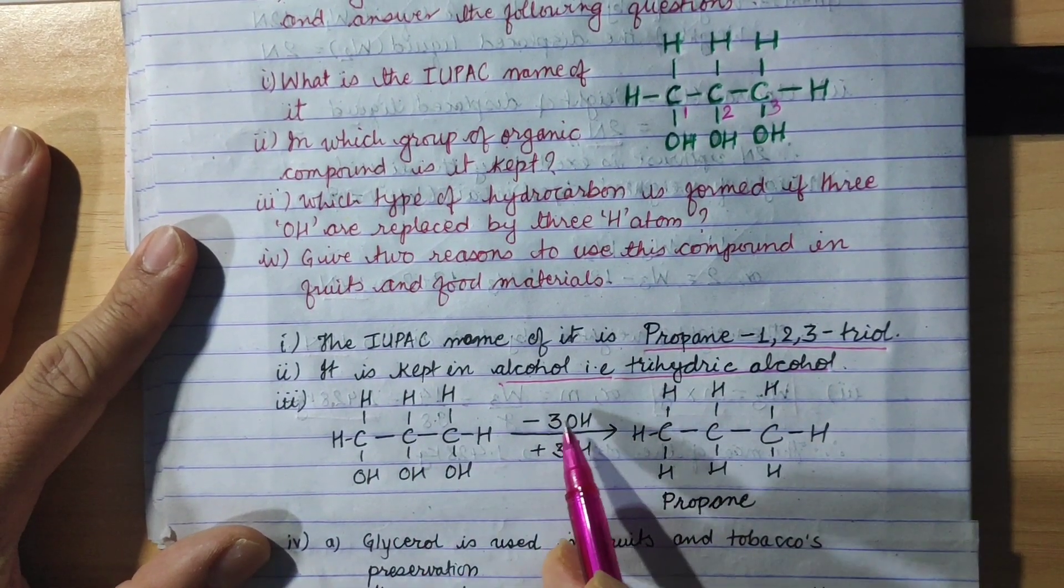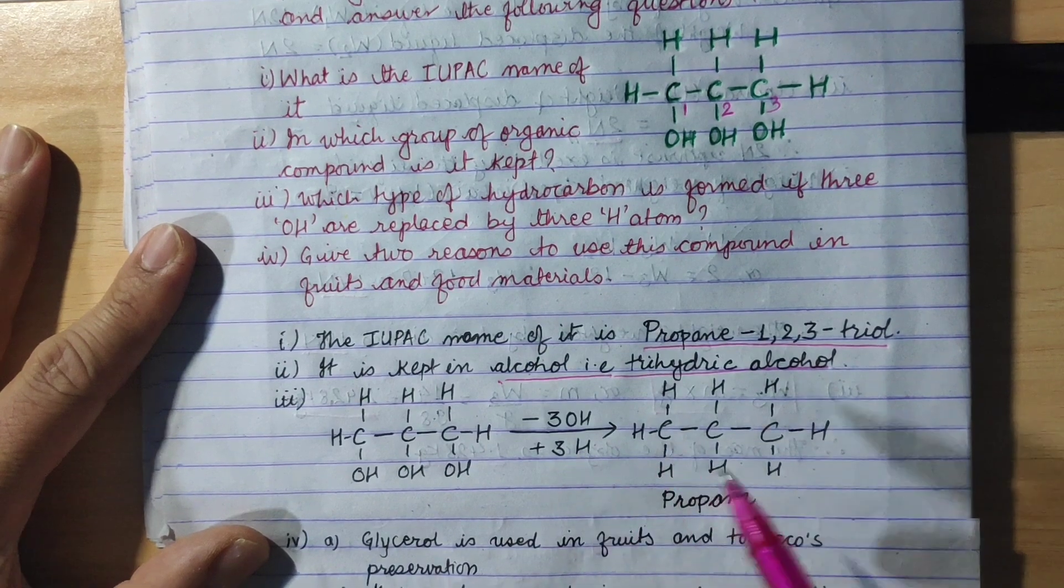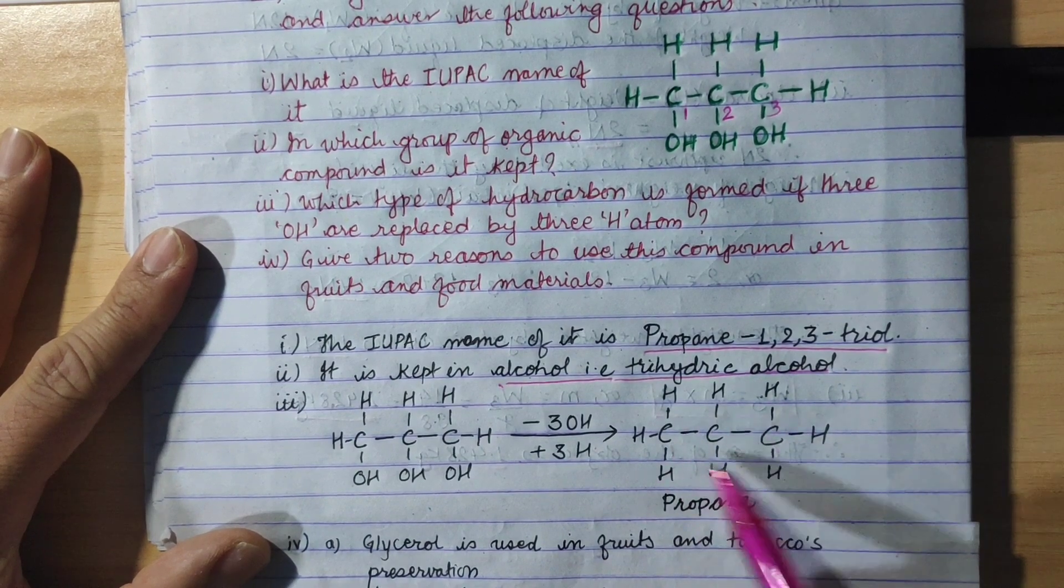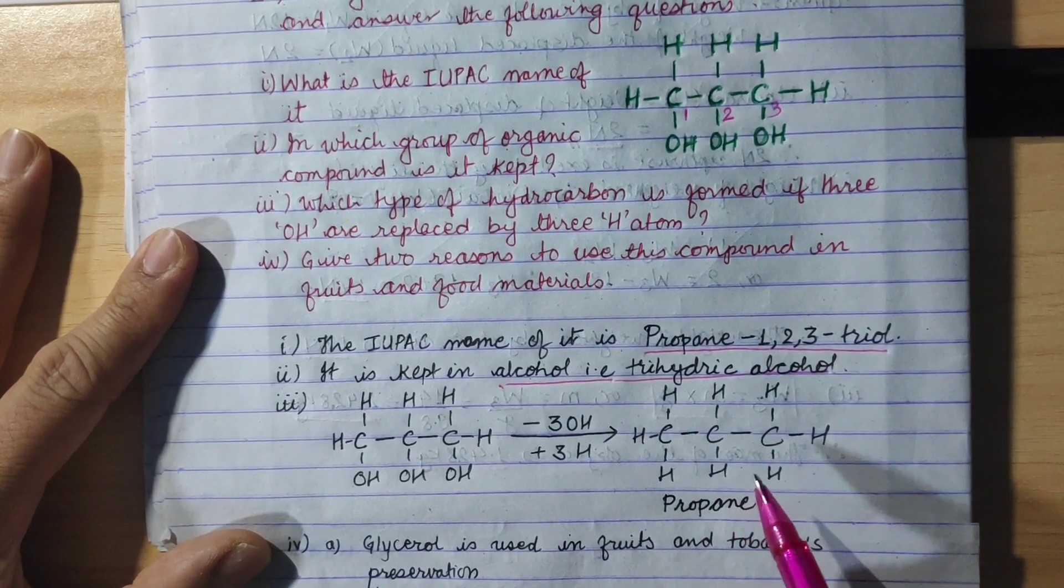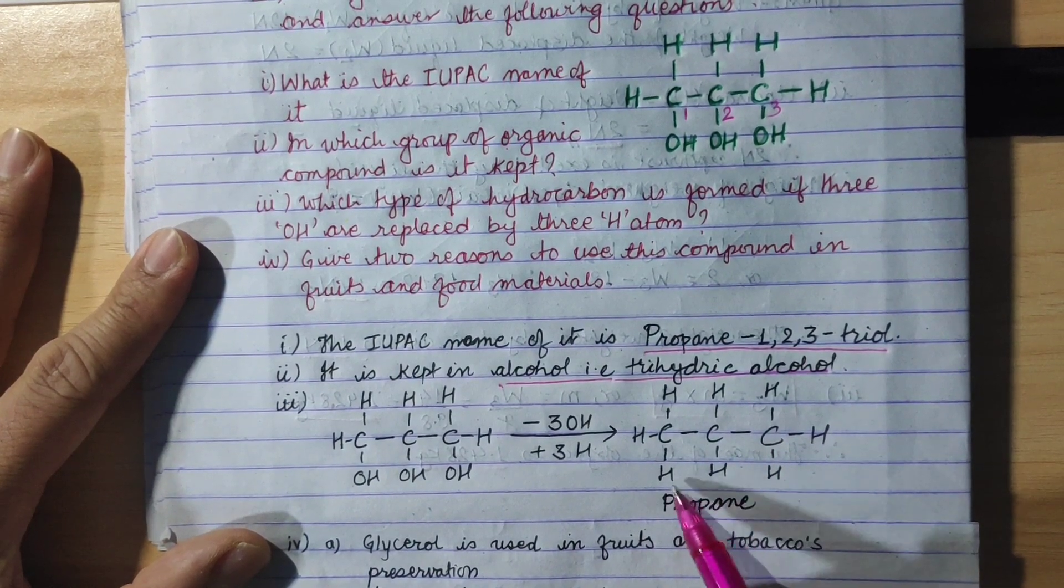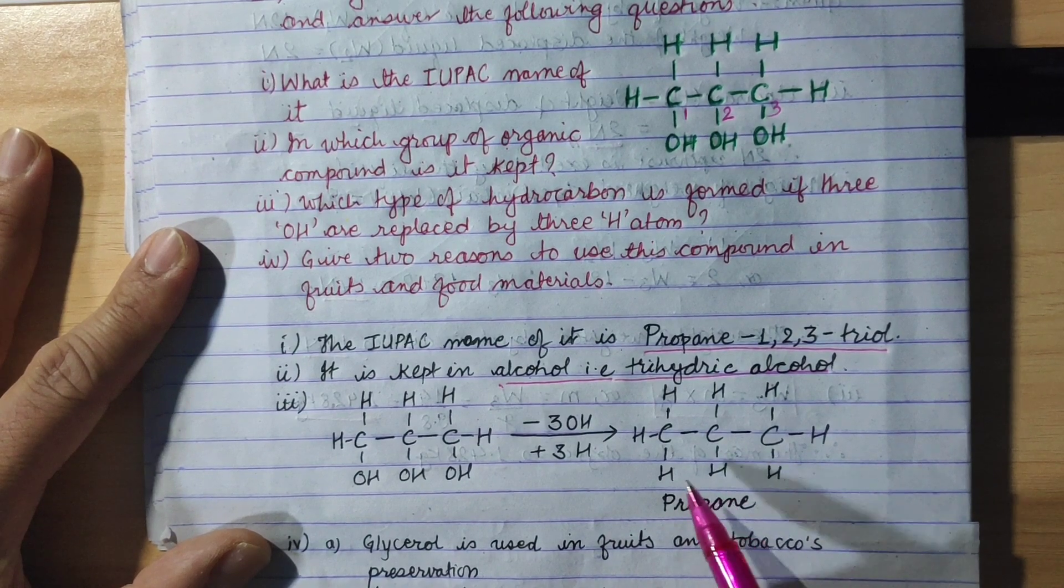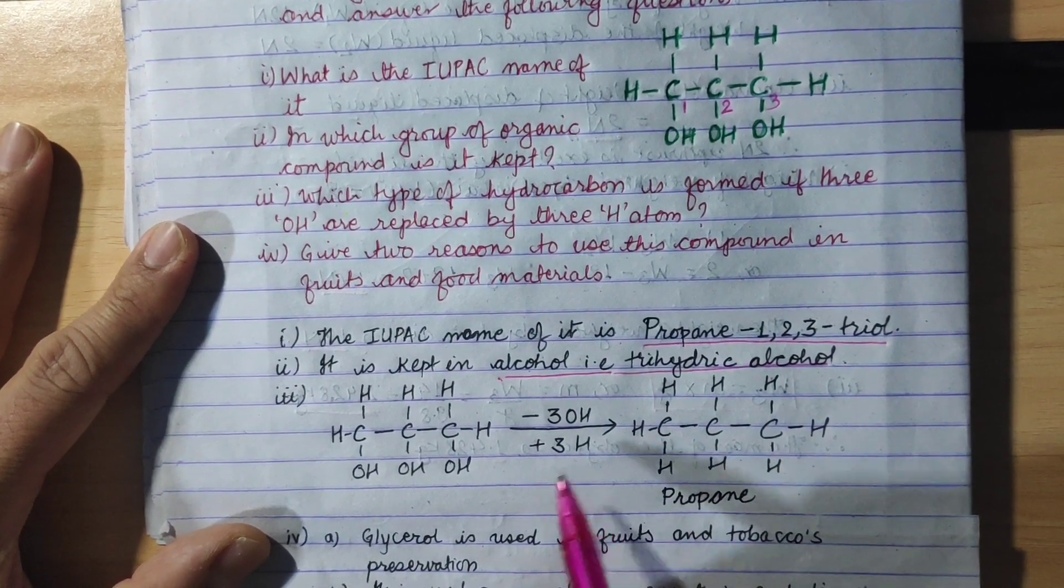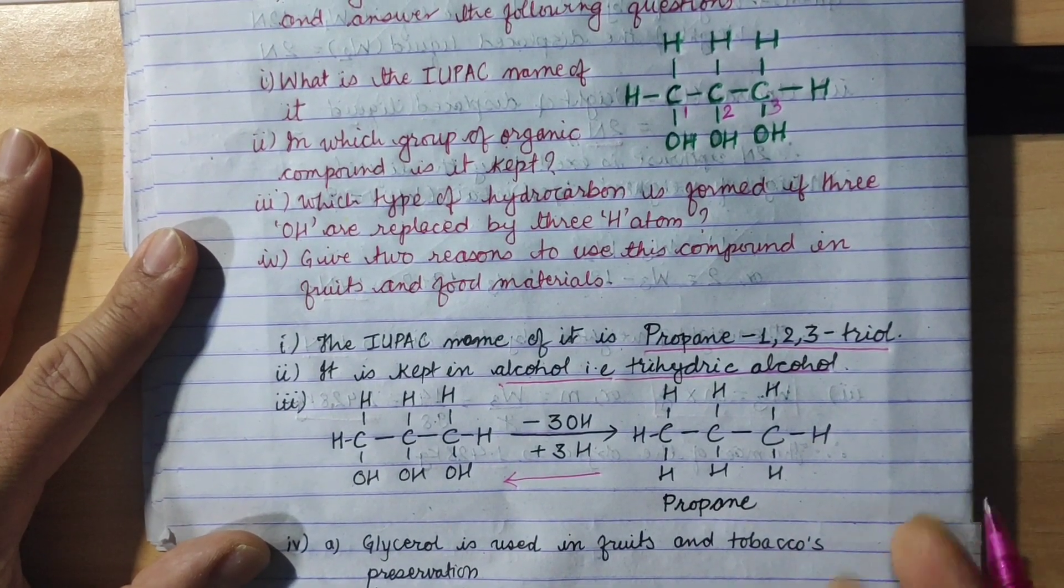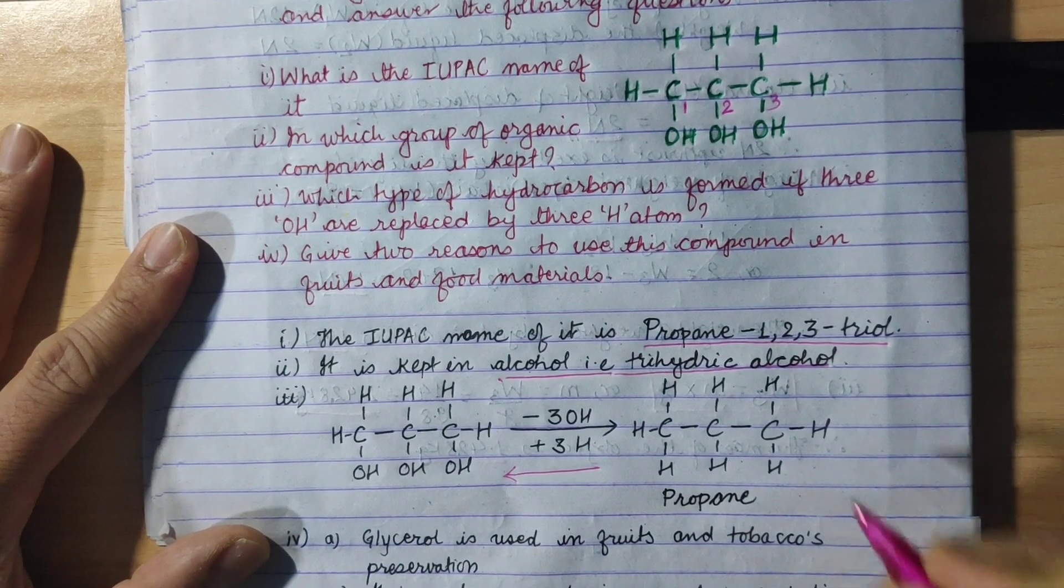This glycerol minus 3 OH plus 3 H equals propane. This is my mistake - it's propane. 3 OH is replaced by 3 H. Glycerol minus 3 OH. You can learn more about glycerol, propane, and propane glycerol. This is an important question.